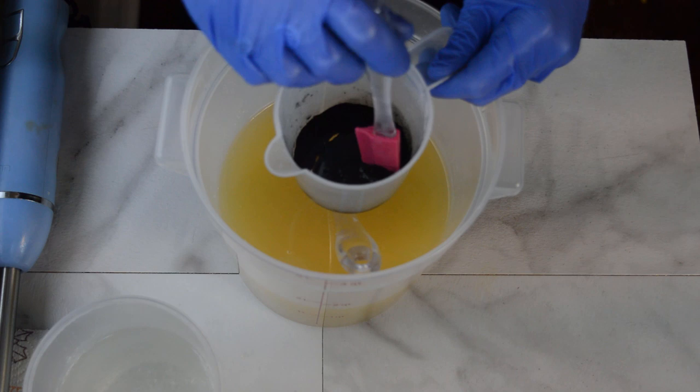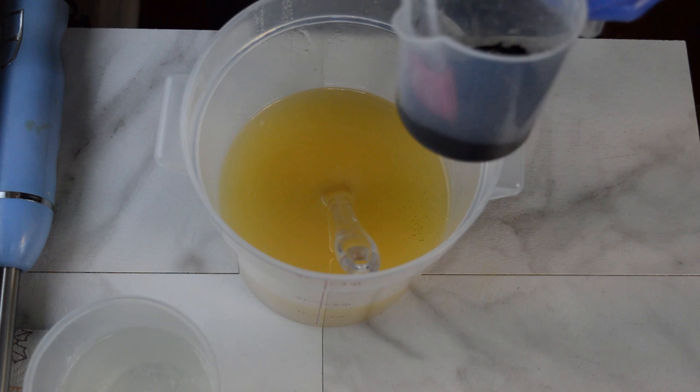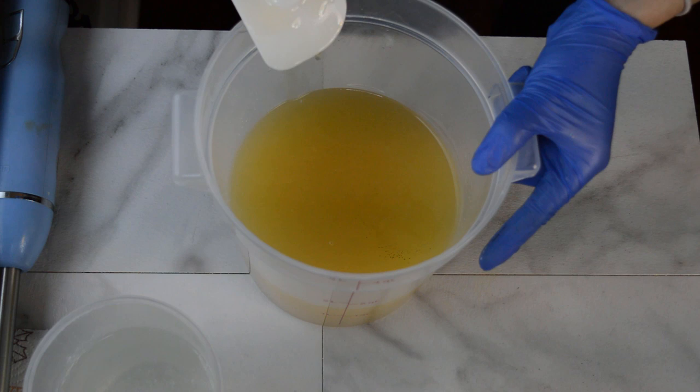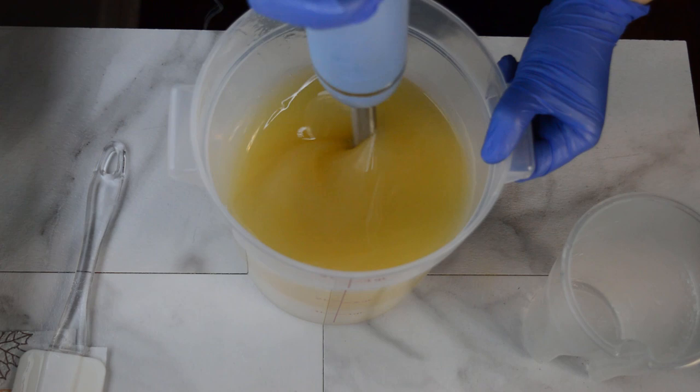Set that to the side, and then we'll start mixing in the lye solution, which I also have added sodium lactate to, and some tussah silk. And into my big container here are like seven different kinds of oils. I also add coconut milk powder to all of my soaps and kaolin clay. So let's get this lye solution into our oils.